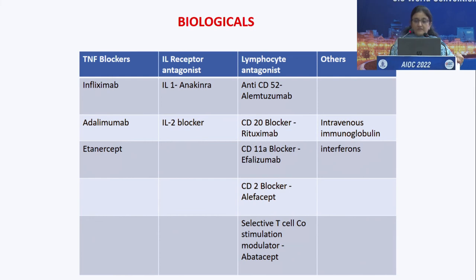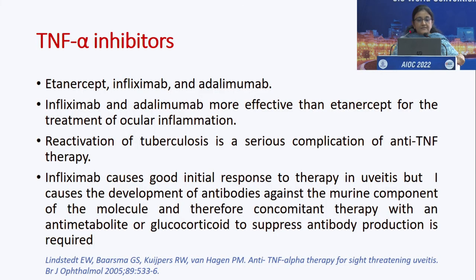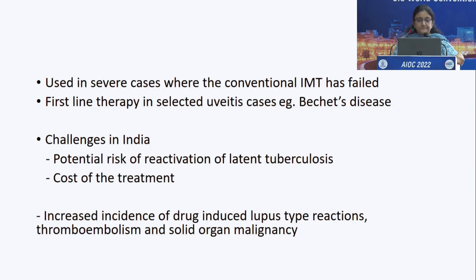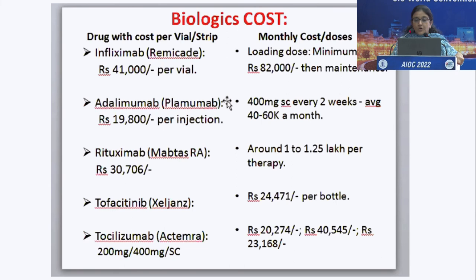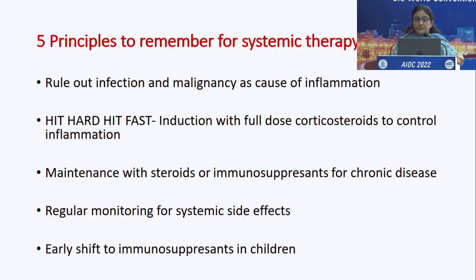Several biologics are commonly used, including infliximab, adalimumab, and etanercept. TNF-alpha inhibitors are also available but less frequently used. They are used in severe cases where conventional immunomodulatory therapy has failed, and are first-line therapy in selected uveitis cases like Behçet's disease. Challenges in India include the potential risk of reactivation of latent tuberculosis and the high cost of treatment, which is unaffordable for many patients.